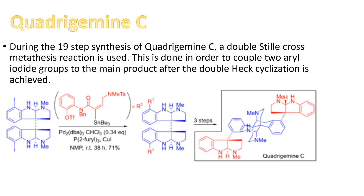Now that we've seen a little bit on the history of this reaction, I'm going to talk about the applications and where this can be used in industry. The first thing I'm going to talk about is Quadrigomycin. During the 19-step synthesis of Quadrigomycin, a double Stille cross coupling reaction is utilized. This is done in order to couple two aryl iodine groups to the main product after double hexacyclization is achieved. If you look at the photo on the bottom left, you can see where the tin complexes come into play, and in the bottom right photo you can see where the two iodine groups get attached.